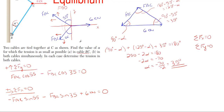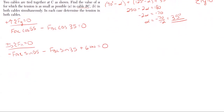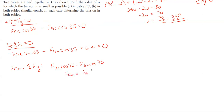With two equations and two unknowns, we solve for one variable in terms of the other. From the y-equation: F_AC·cos(55°) = F_BC·cos(35°), so F_AC = F_BC × cos(35°)/cos(55°), which gives F_AC = 1.43·F_BC.